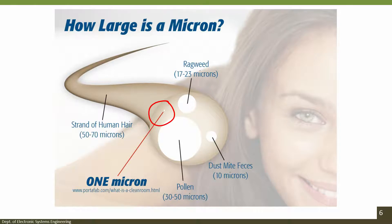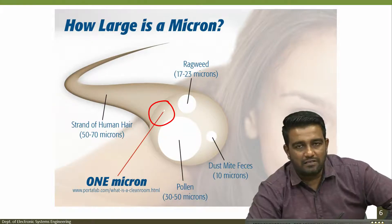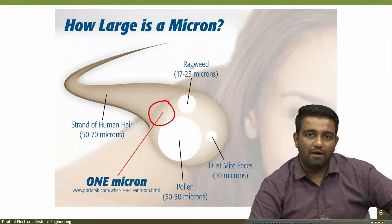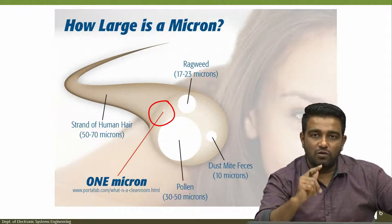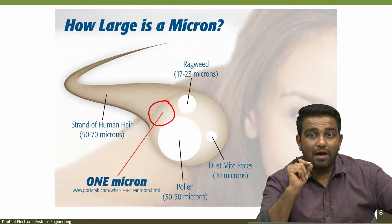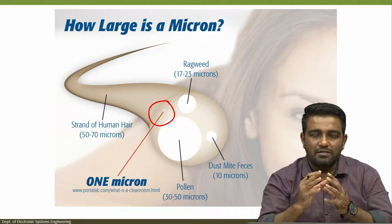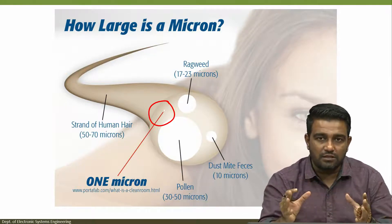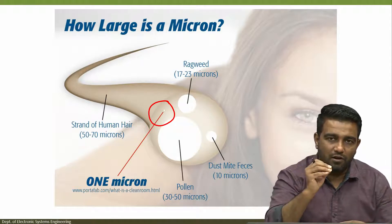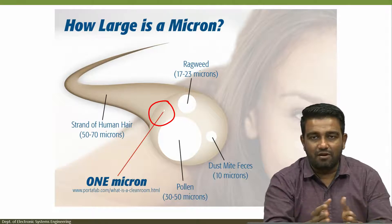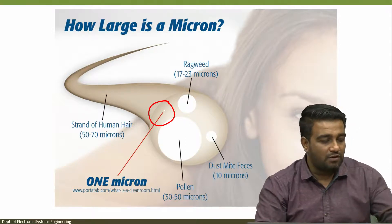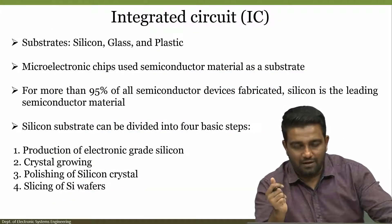Comparatively, within one micron using today's technology we can accommodate billions of transistors — a single micron area will have millions of transistors. That means if there is a dust particle falling on that one micron area, it will destroy a few transistors. That is why we require a clean room facility.